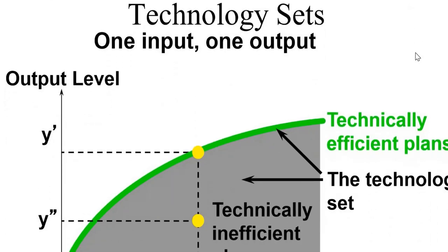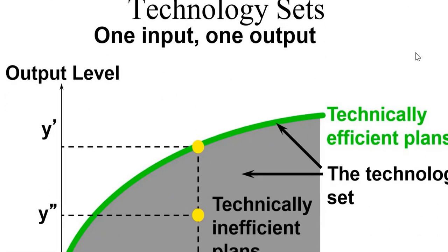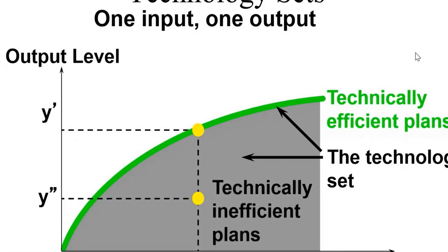Technology set with one input and one output: the production function shows all the points which are efficient plans, and any plan below it is called an inefficient plan.